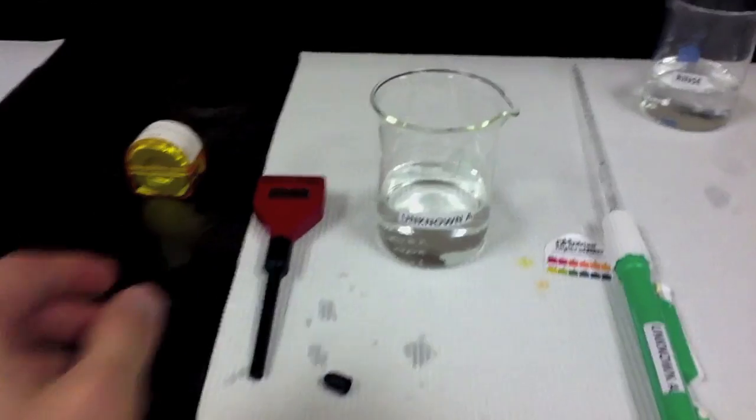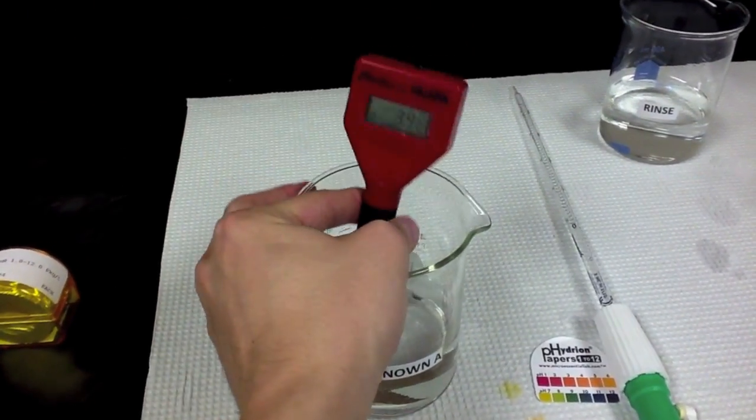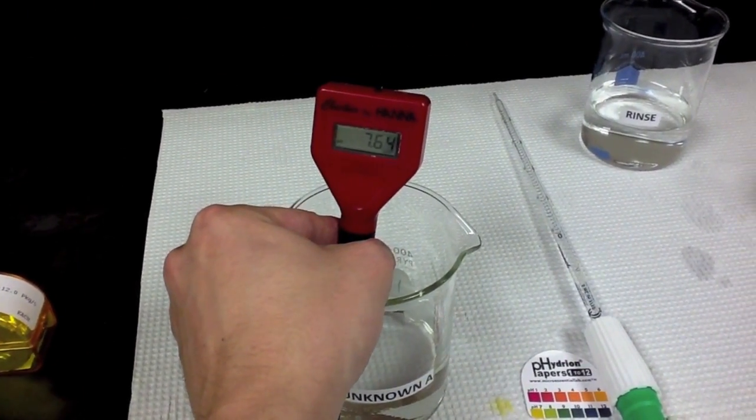After we've calibrated our pH meter, we can place it into a solution of an unknown pH and the meter will display the pH of that solution.